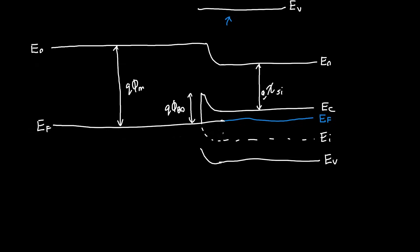Now when electrons try to move from the semiconductor side into the metal side, they also see a barrier — but it's not the same height. It's equal to the amount of band bending that occurred, which I'll call q·φ_ms. This holds in pretty much all cases unless we've got trapped charge somewhere.